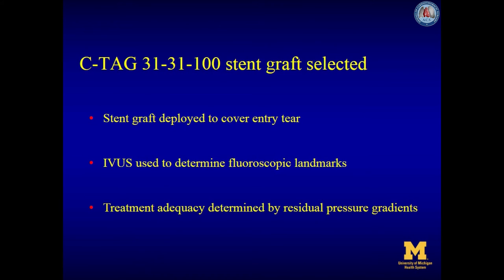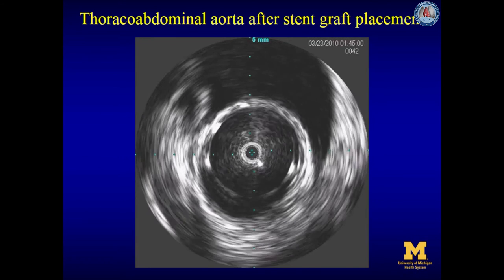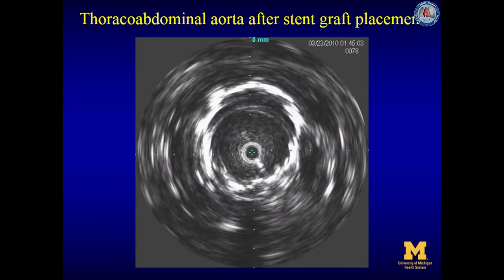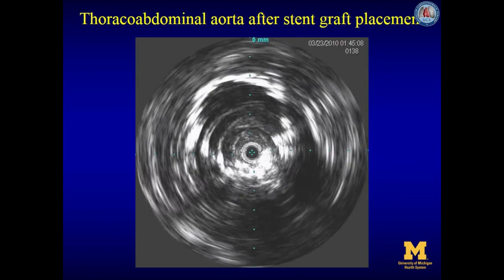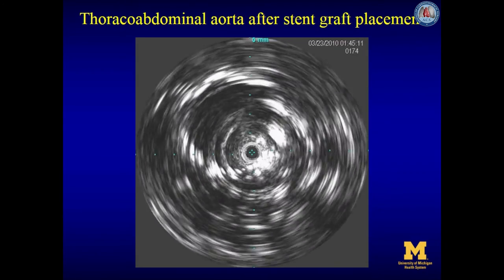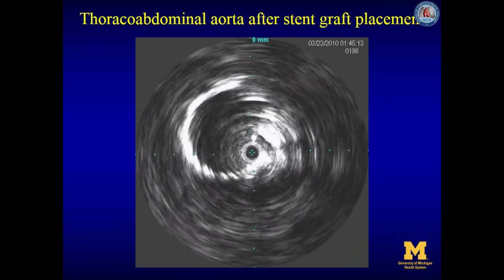A Gore CTEC device of 31 millimeters diameter and 100 millimeters in length is selected. The stent graft is deployed in order to cover the entry tear, while intravascular ultrasound is used to determine fluoroscopic landmarks. After stent graft deployment, the residual pressure gradients determine treatment adequacy. On IVUS, we are now in the mid section of the thoracic stent graft — it only covers the entry tear and stops short of the visceral segment.